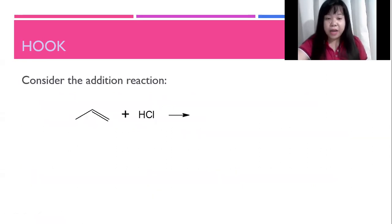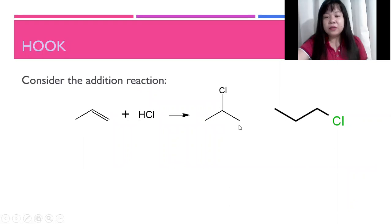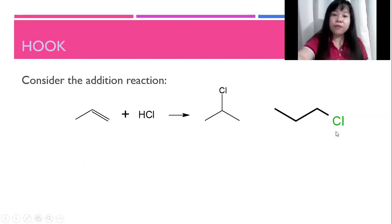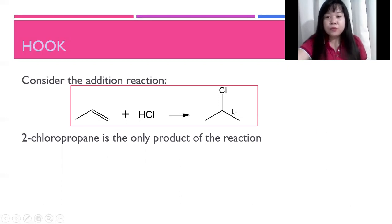Consider the following addition reaction: we have an alkene reacting with HCl. What could the product be? We can predict that this would be an addition process, but we may have two possible products. The chlorine atom would possibly attach to one carbon or the other carbon, resulting in different structures. However, in reality, we only have one product: 2-chloropropane. Now, what would enable us to deduce which of the two possible products would be the most likely product?